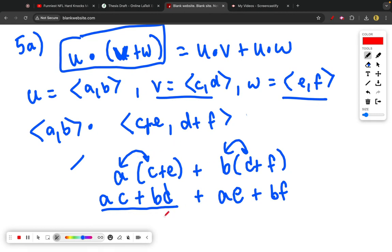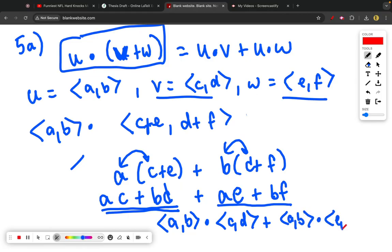So sorry about that, but you can see that this is ⟨a,b⟩ · ⟨c,d⟩ - that's this side right here. And then this side right here is ⟨a,b⟩ · ⟨e,f⟩, and so then we have the